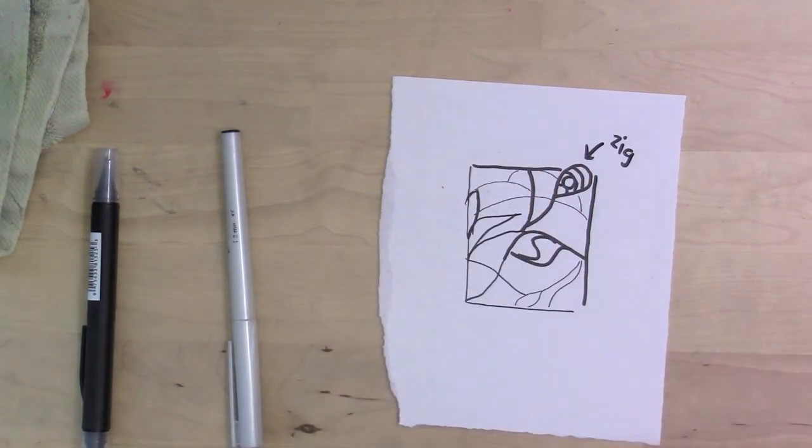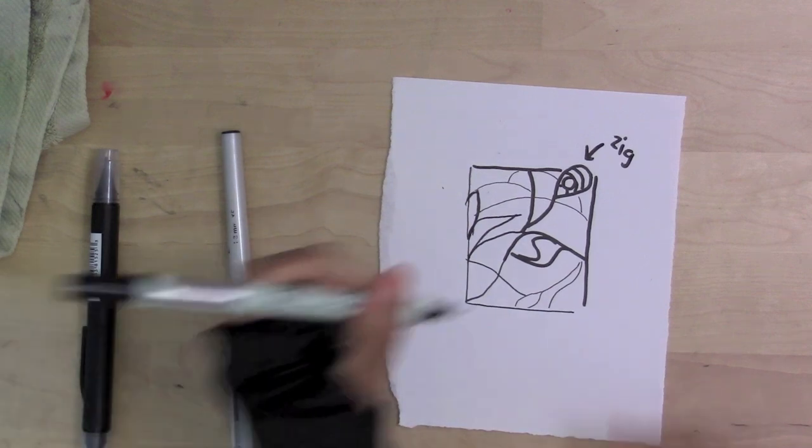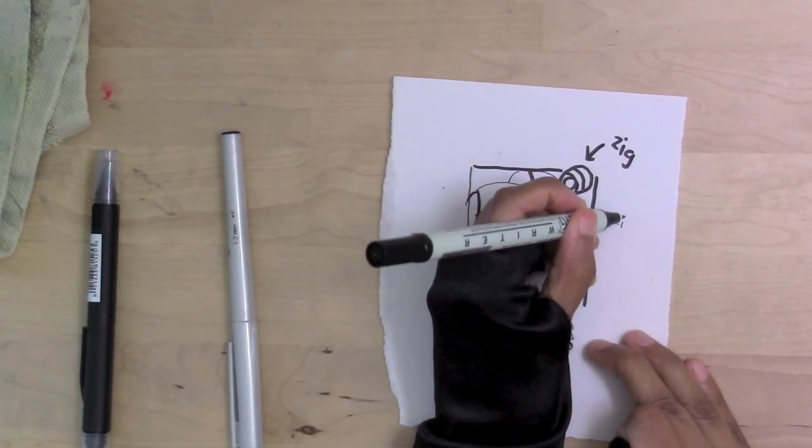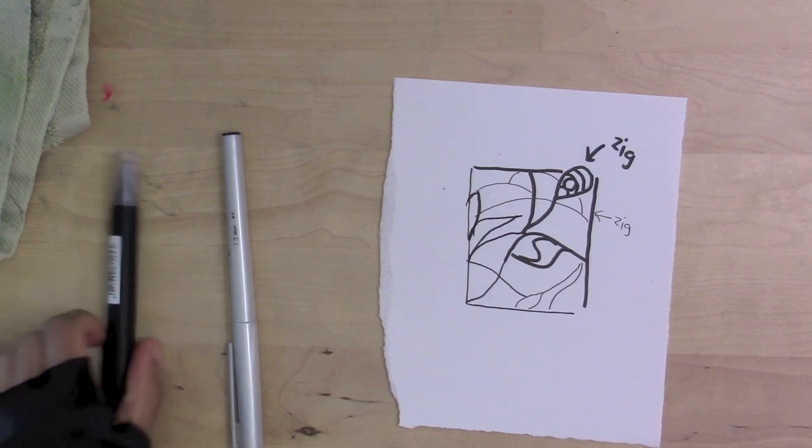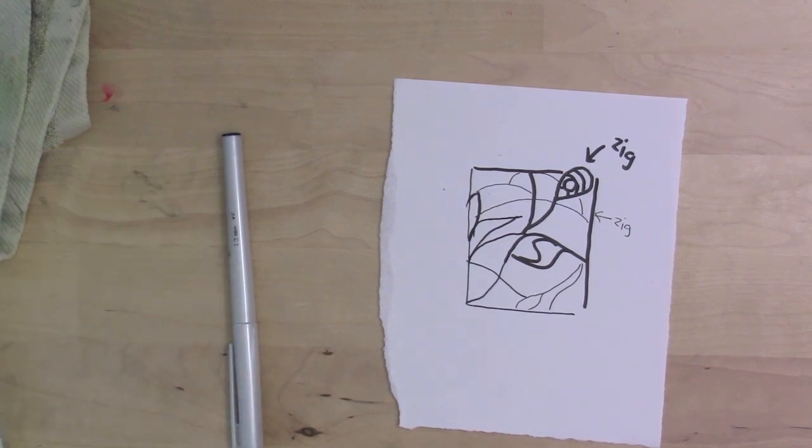Now I'm going to label these for clarity. This is the Zig marker and this is also the Zig marker with the finer point. This is the Itoya marker.